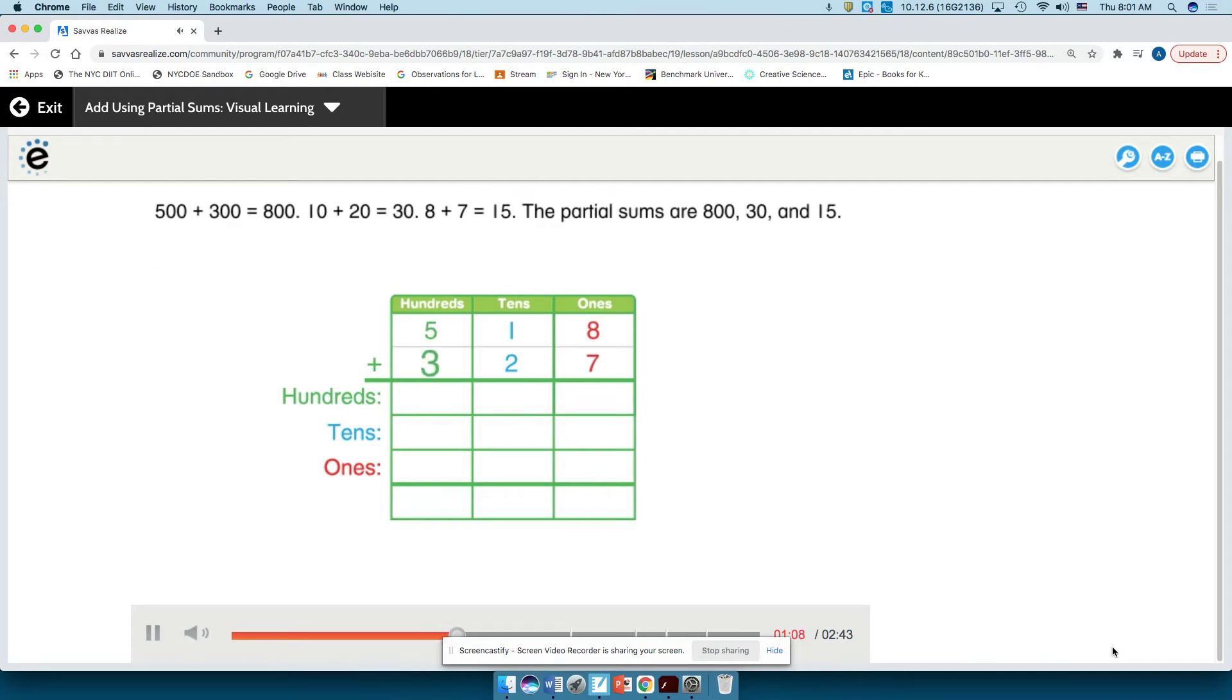500 plus 300 equals 800. 10 plus 20 equals 30. 8 plus 7 equals 15. The partial sums are 800, 30, and 15.